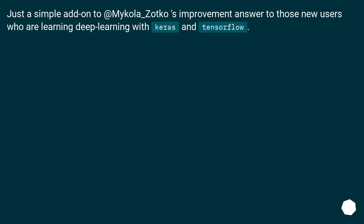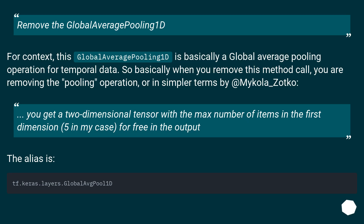Add a custom loss function. This is an add-on to the accepted answer for those new users who are learning deep learning with Keras and TensorFlow. Remove the Global Average Pooling 1D. For context, this Global Average Pooling 1D is basically a global average pooling operation for temporal data. So basically when you remove this method call, you are removing the pooling operation. You get a two-dimensional tensor with a max number of items in the first dimension — five in my case — for free in the output.